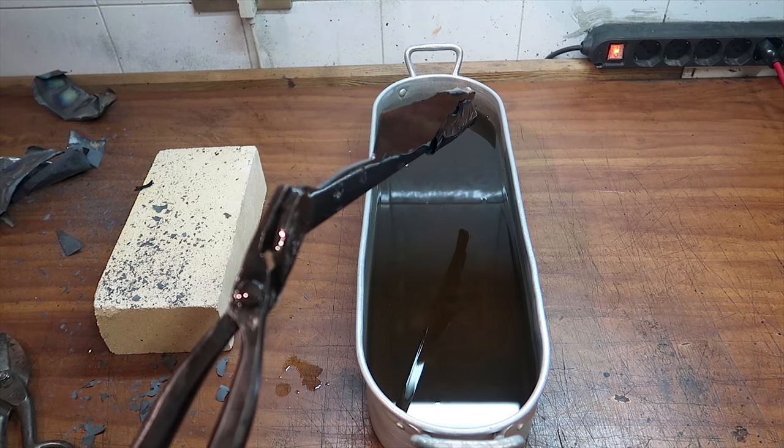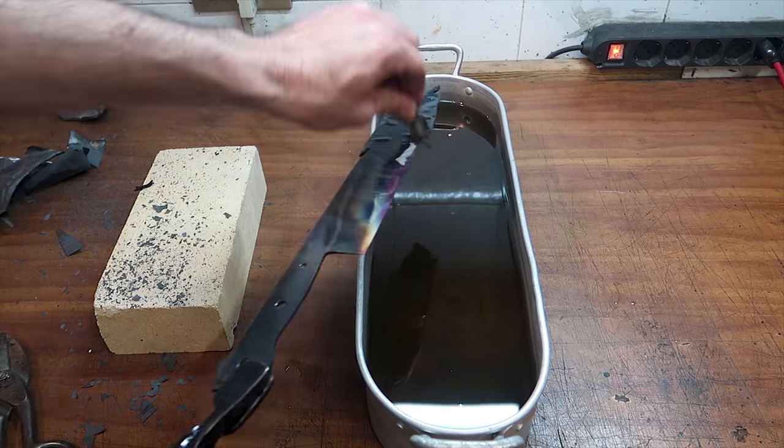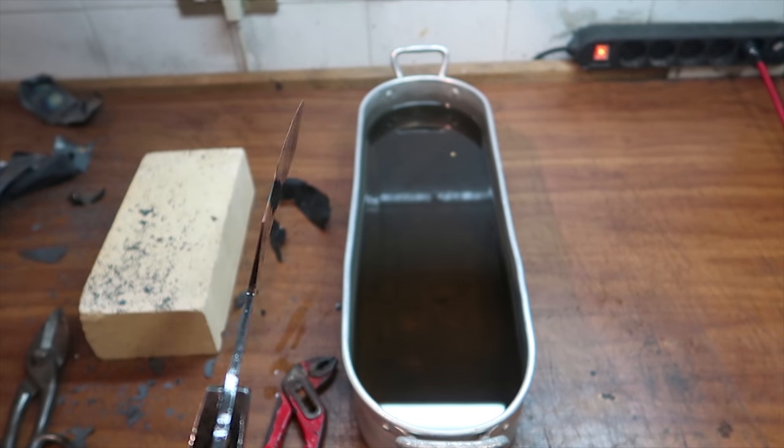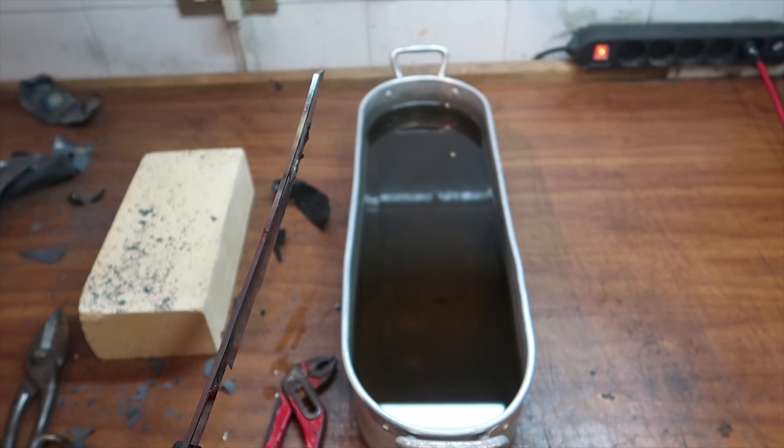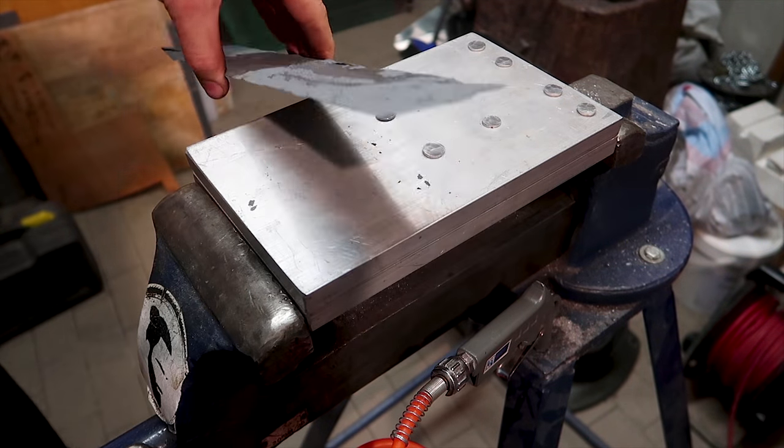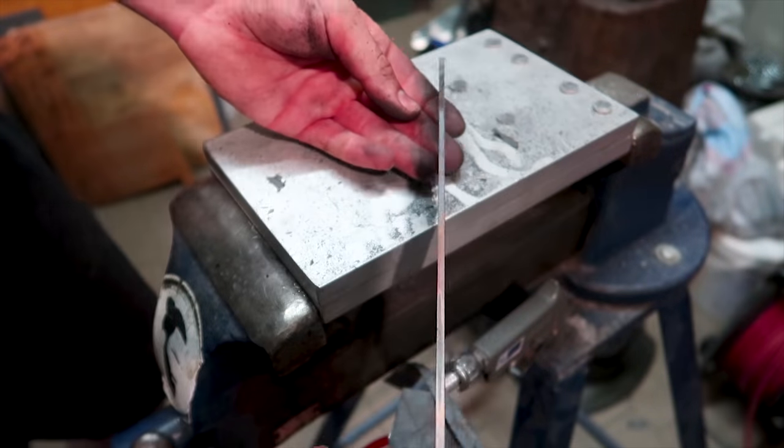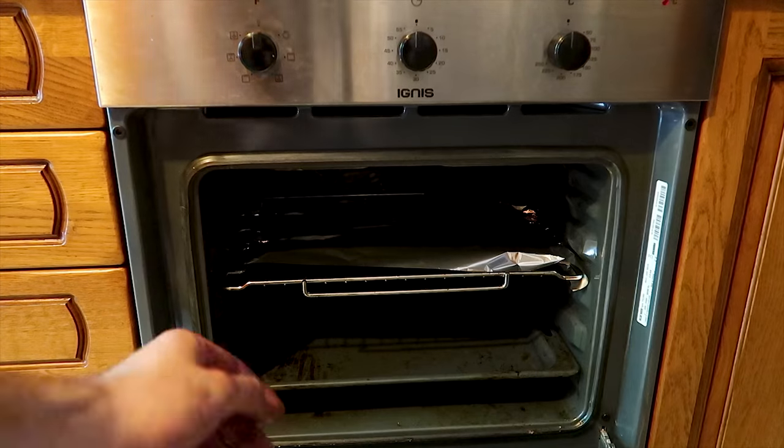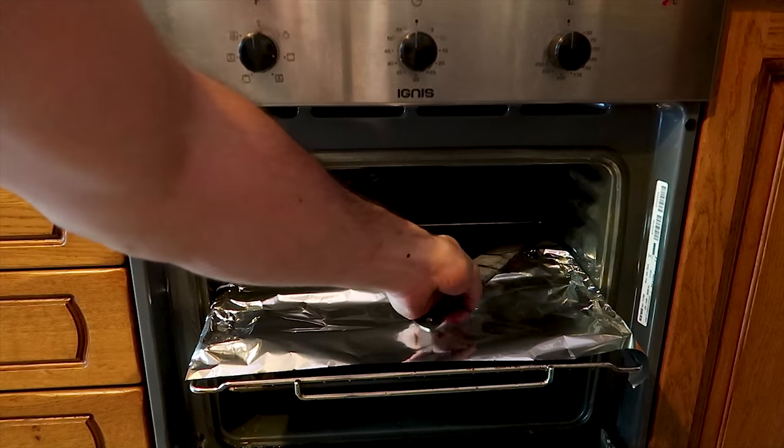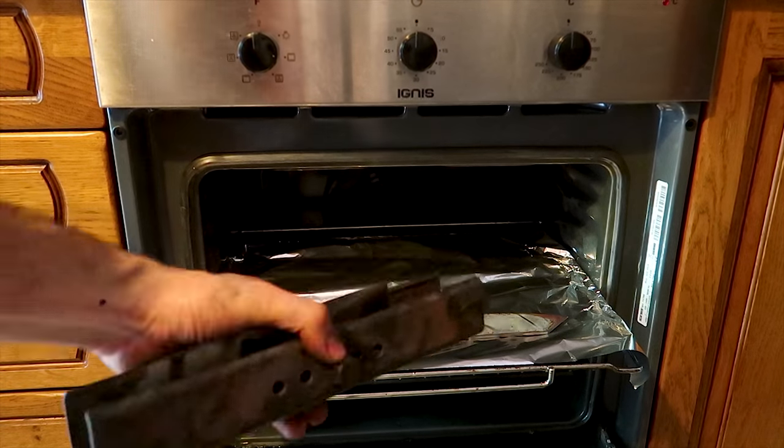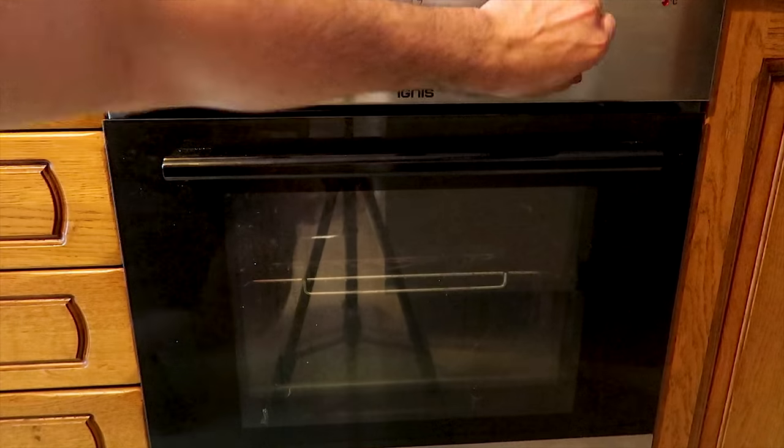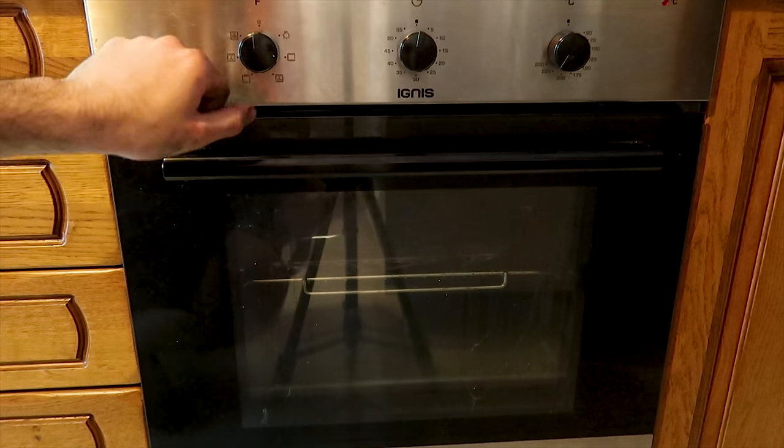I don't know why but this foil really stuck to the blades. Maybe I'm not using the right one, but it was really hard to take off in both blades. Finally, for the tempering, I'm placing both blades in the oven at 220 degrees for 2 hours. And after that, the heat treating process is complete.